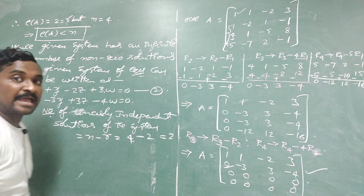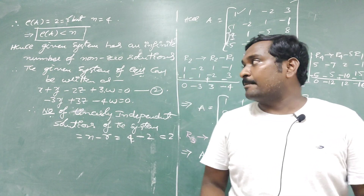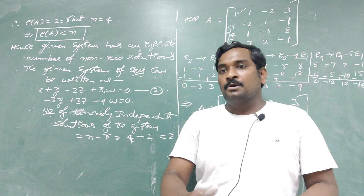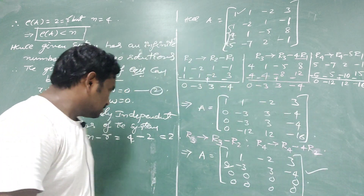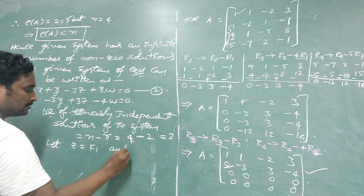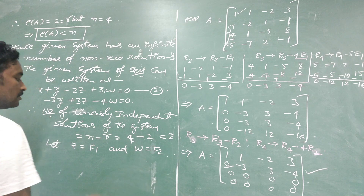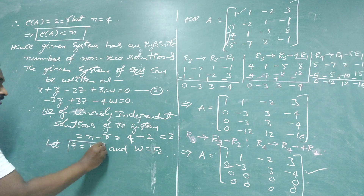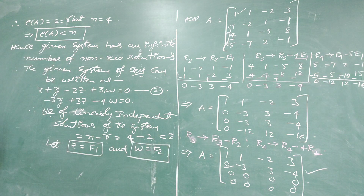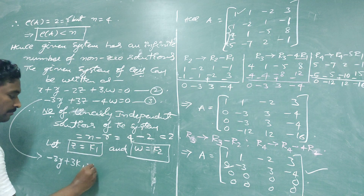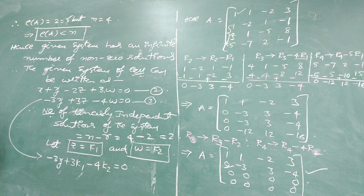The given system has 2 linearly independent solutions, meaning 2 of the 4 variables X, Y, Z, W must be assigned as free parameters. In general, take the last 2 variables as parameters: let Z = K1 and W = K2, where K1 and K2 are non-zero parameters. If N - R were 1, only one variable would be assigned a parameter.